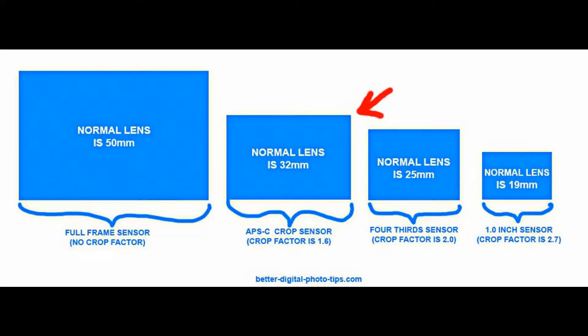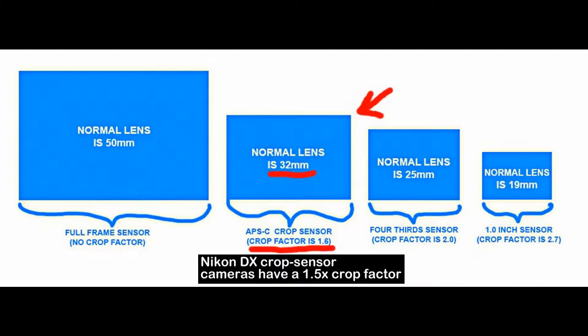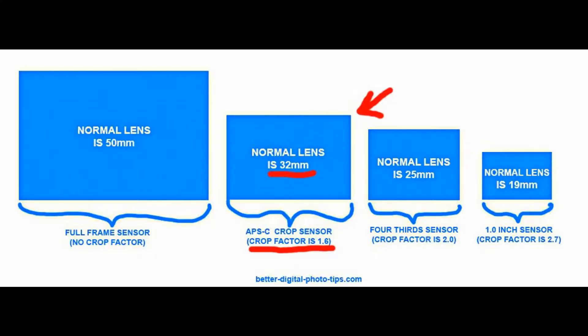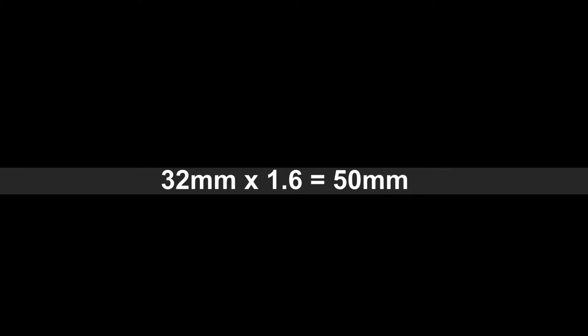Now look at the crop sensor. You'd get the same perspective as a 50 millimeter lens on a full frame camera by using a 32 millimeter lens on a crop sensor camera. Canon calls their crop sensor APS-C and Nikon calls their crop sensors Nikon DX. You just multiply the lens millimeter number by the crop factor to get the equivalent number for a full frame camera — a 32 millimeter lens on the crop sensor times 1.6 gives you a 50 millimeter equivalent. Once you get a basic understanding of focal length and crop factor, you'll be in a much better position to choose the right lens for your situation.